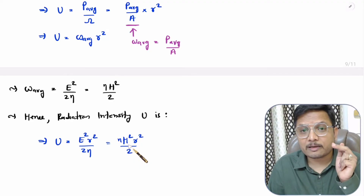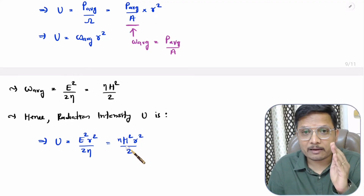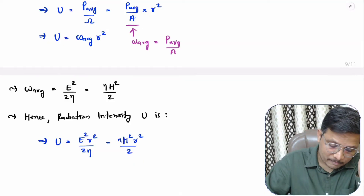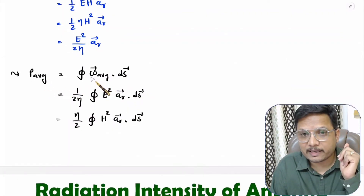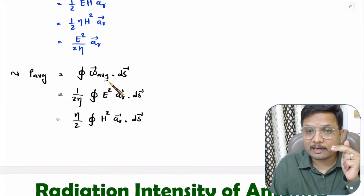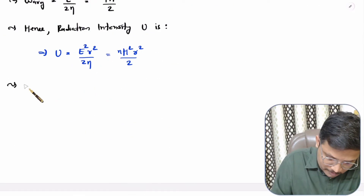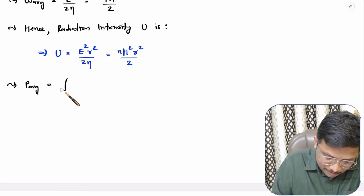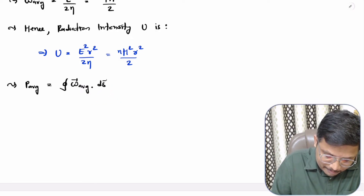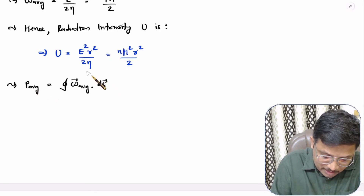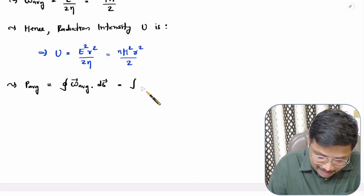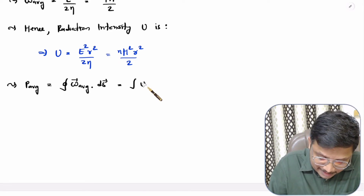Sometimes there can be questions based on calculating average power from radiation intensity. In my last video I explained that average power is the surface integration of average power density. Similarly, if you want to calculate average power based on radiation intensity, then it is the solid angle integration of radiation intensity. So if you integrate radiation intensity with respect to solid angle, you will have average power.